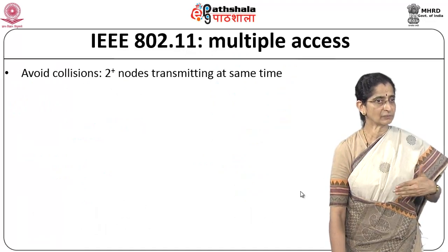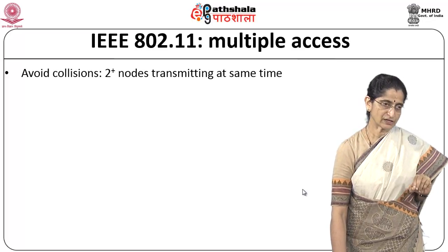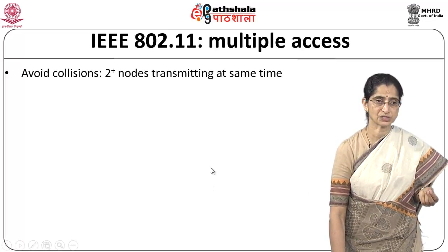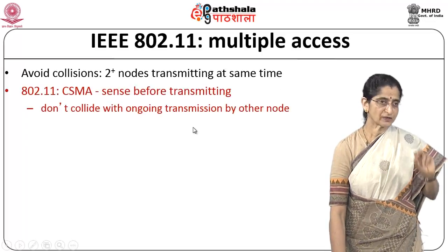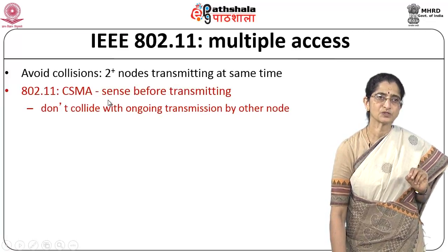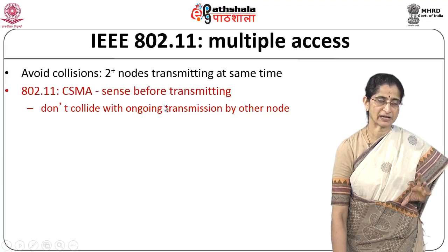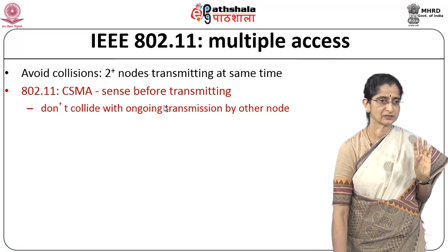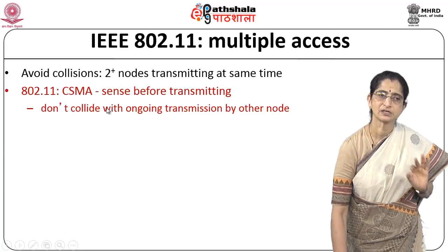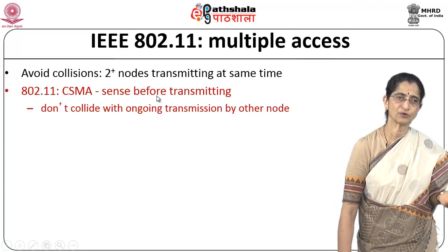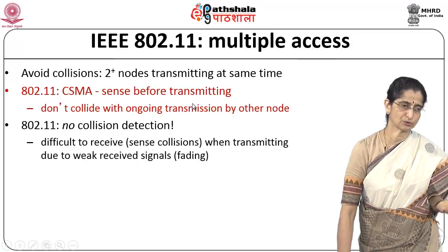When multiple devices access the network, we need to avoid collisions when more than two nodes transmit at the same time. First, we use CSMA — carrier sense multiple access — similar to Ethernet: sense the carrier before transmitting. If there is already a transmission going on, we do not want to collide with it. If we sense no ongoing transmission, then we could transmit.